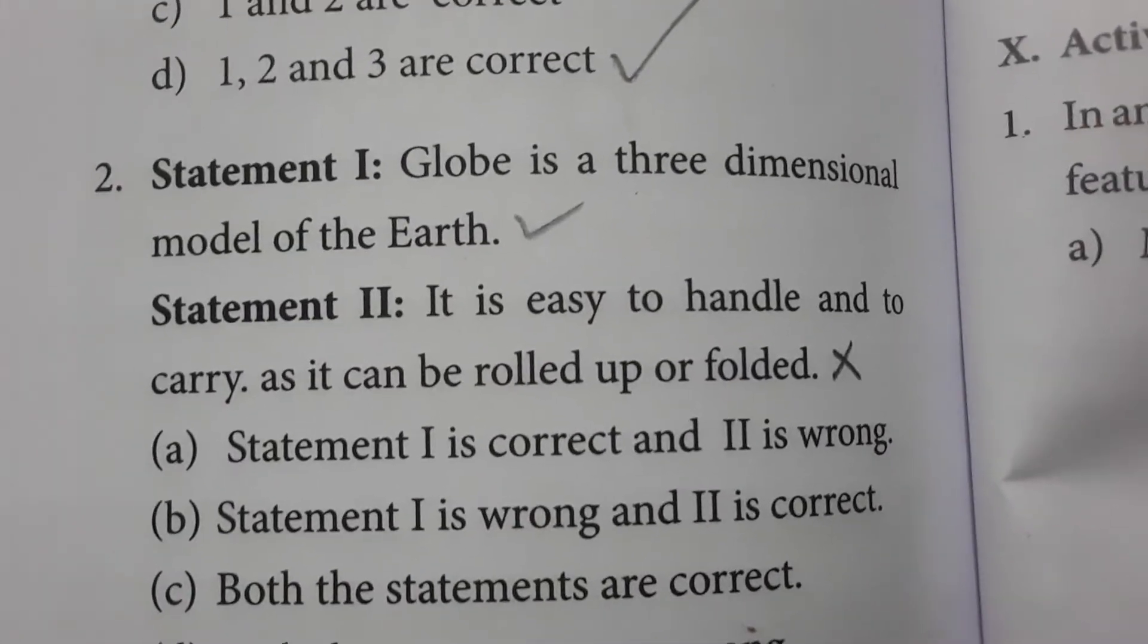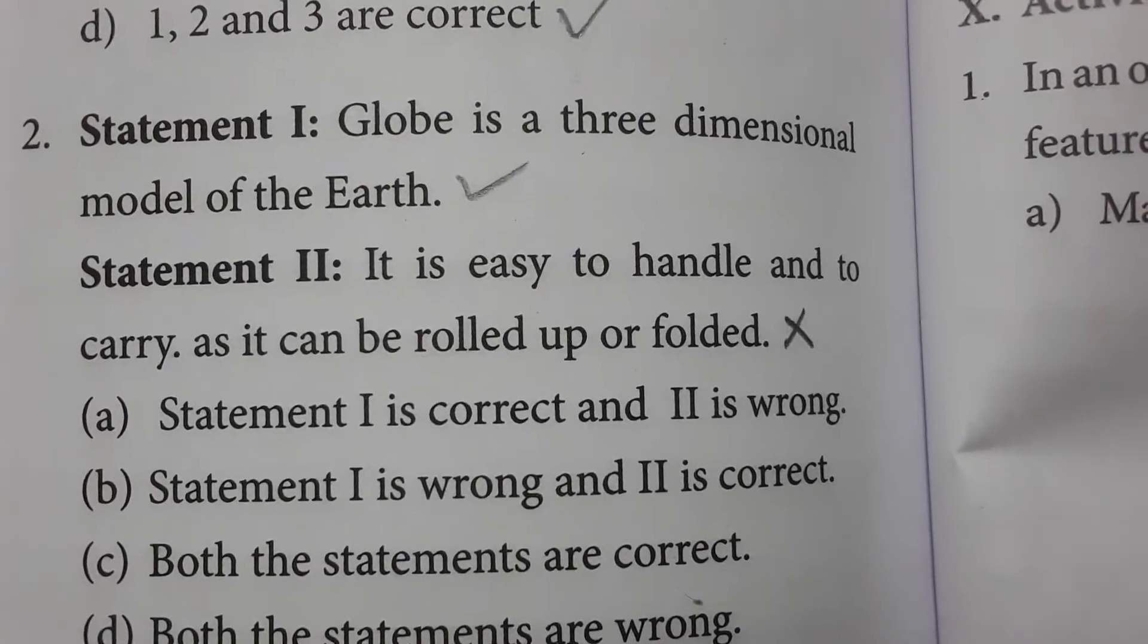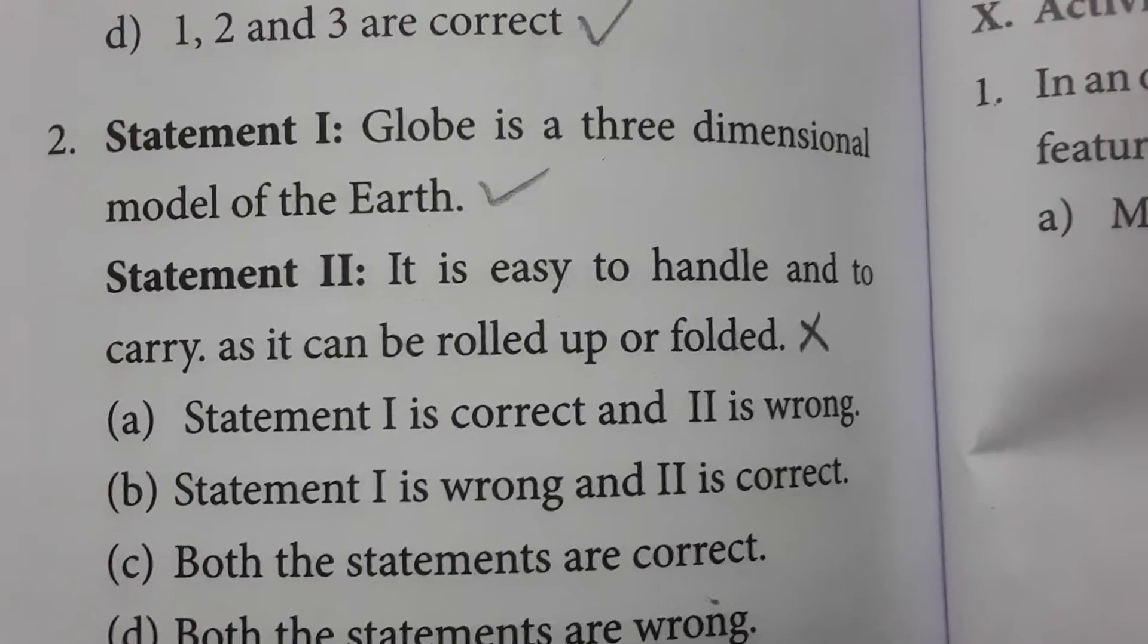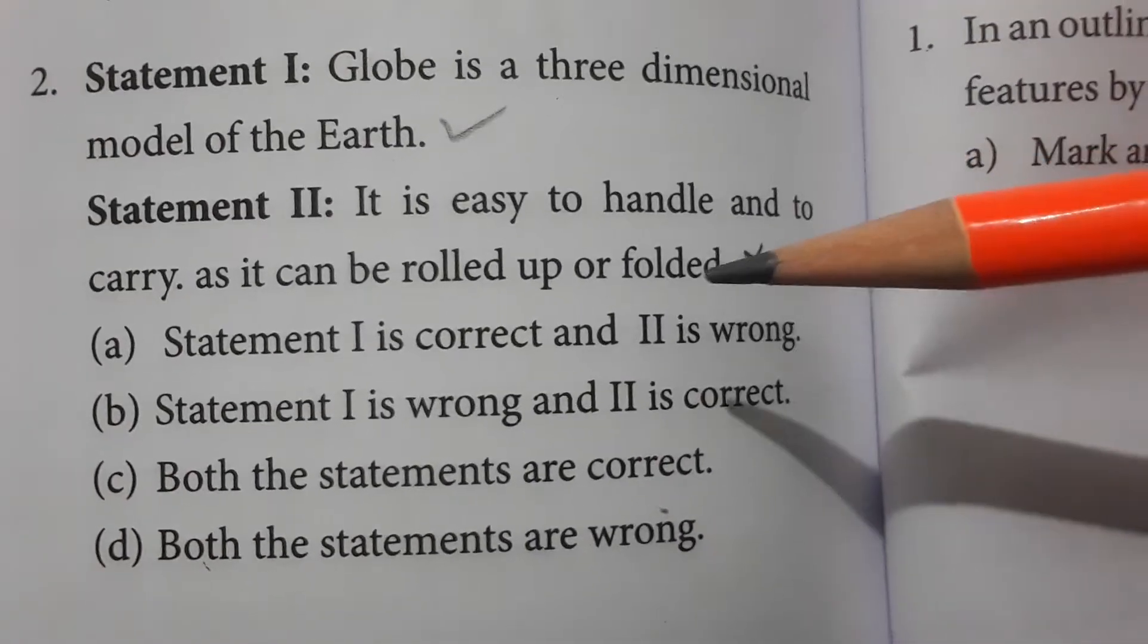Statement 1: Globe is a three-dimensional model of the earth. Statement 2: It is easy to handle and carry as it can be rolled up or folded. Statement 1 is correct, whereas statement 2 is wrong. So statement 1 is correct and second is wrong.